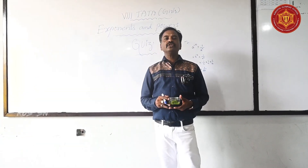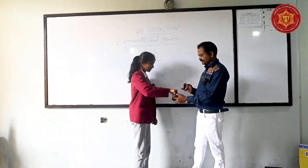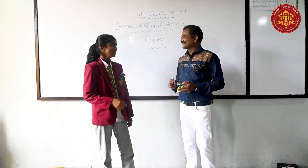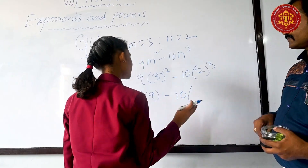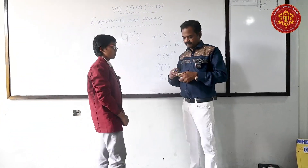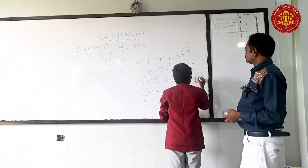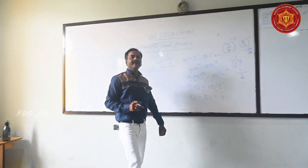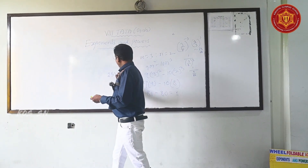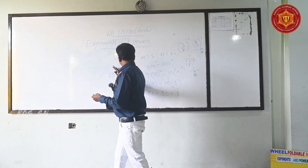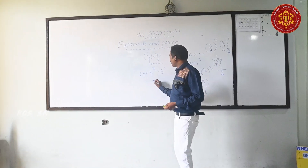Any one of you come from Shakuntala territory? Let's go. The next problem: 25 into 25 into 5 to the power of x equals to 8. Find the value of x.